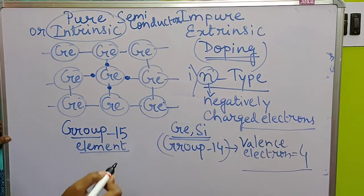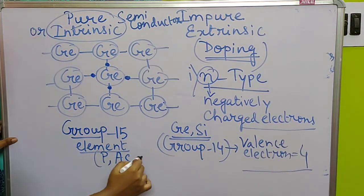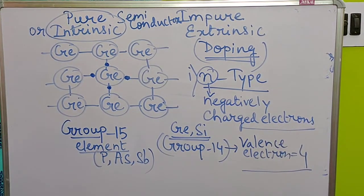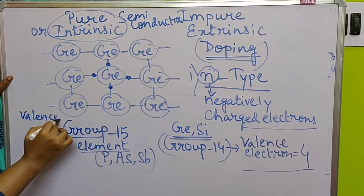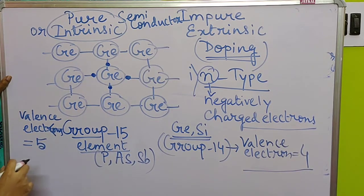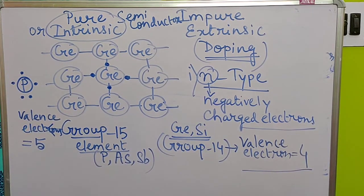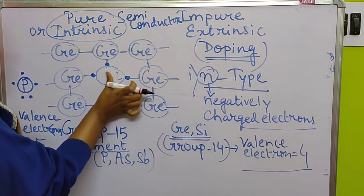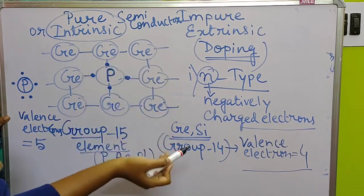Group 15 elements that can be added include phosphorus, arsenic, antimony, and bismuth. Group 15 elements have 5 valence electrons. By replacing one germanium atom with phosphorus (this process is doping), phosphorus makes 4 covalent bonds with the surrounding germanium atoms, but one electron remains unused.